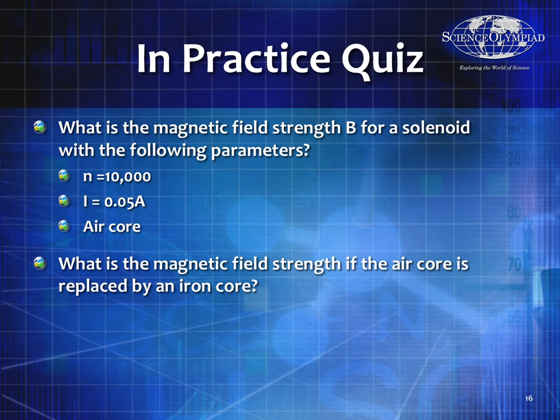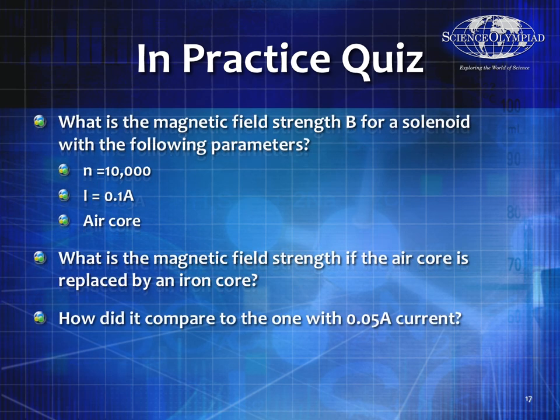Using the equations in the practice, what is the magnetic field strength B for a solenoid with the following parameters: 10,000 turns per meter, current of 0.05 amps, and an air core? With an air core, you can assume free space. If the air core is replaced by an iron core, go back and look up the permeability of iron — which should be in your binder — multiply by that, and it will be much stronger. In this next case, we doubled the current, and that's the only change. Figure out what the changes are to the magnetic field strength and see if that makes sense.